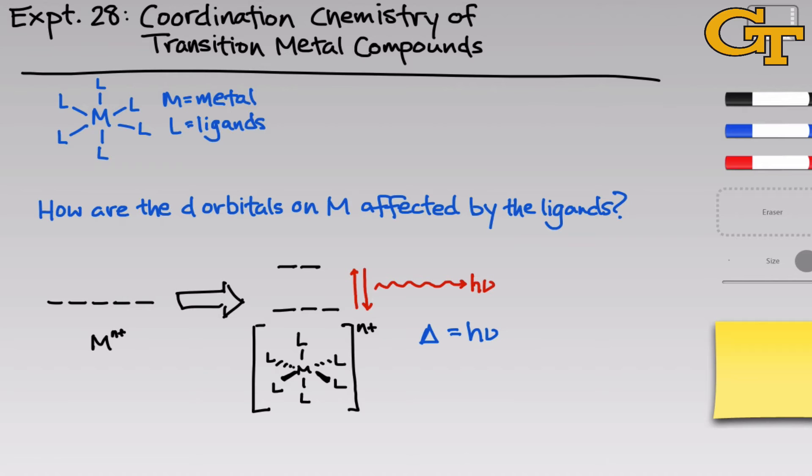The extent of the splitting is written with the delta symbol, it's called the crystal field splitting parameter, and we can relate that to the frequency of the light emitted using essentially what is E equals h nu. Here I've written it as delta equals h nu. Keep in mind that this delta or delta oct for an octahedral complex is an energy value.